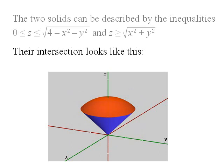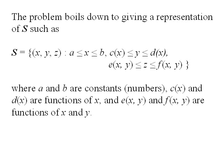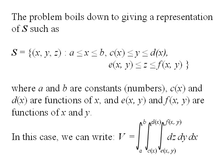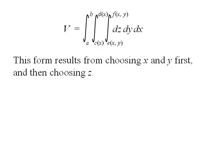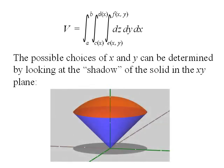Their intersection looks like this. The problem boils down to giving a representation of our solid S such that x is between two numbers, y is between two functions of x, and z is between two functions of x and y. We can write the volume integral in this iterated form. This form of the iterated integral results from choosing x and y first, and then choosing z. The possible choices of x and y can be determined by looking at the shadow of the solid in the xy plane, which is perhaps the easiest way to set up this problem.